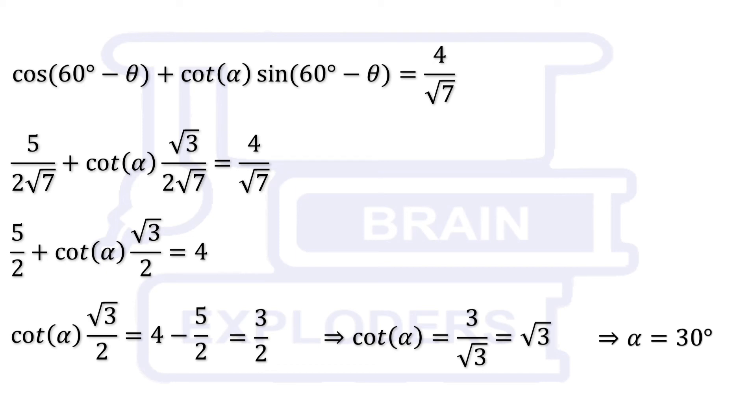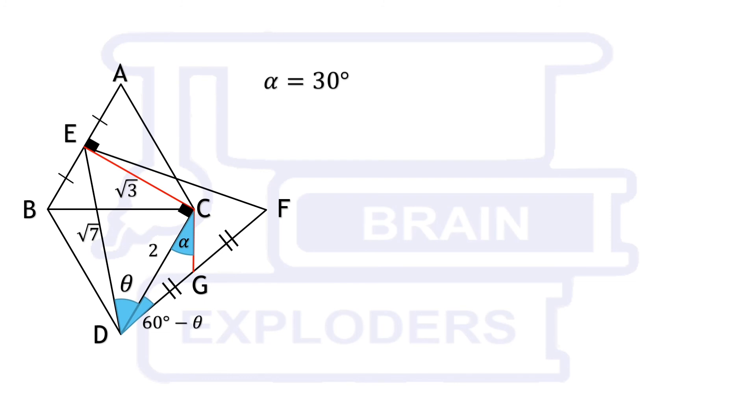Angle ECG is the sum of angle ECD and alpha so angle ECG is equal to 120 degrees.